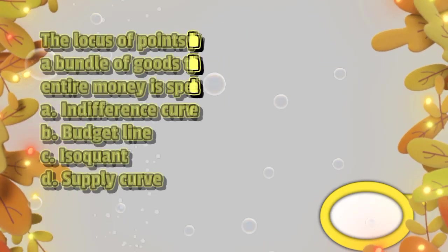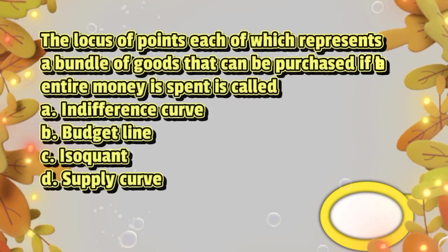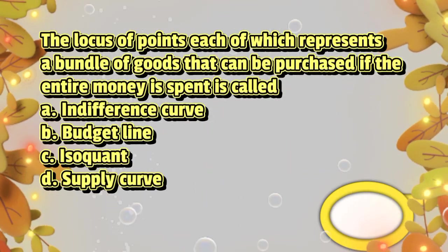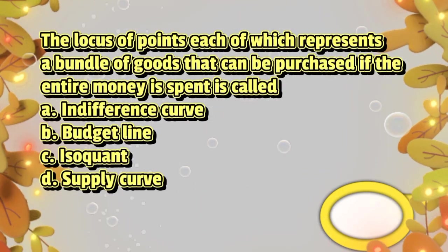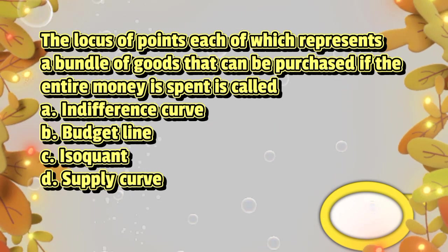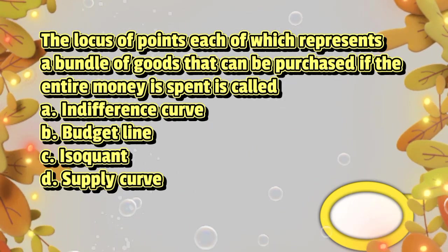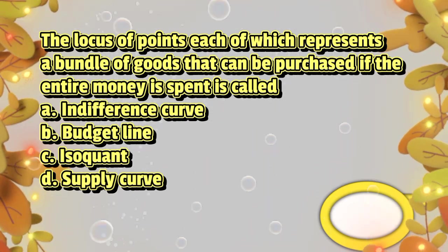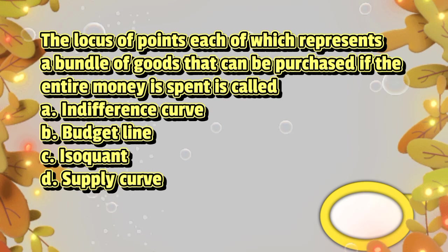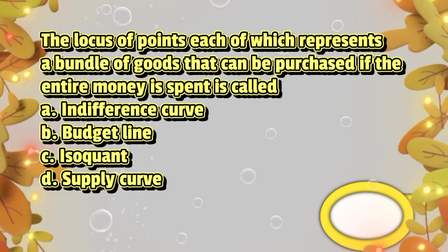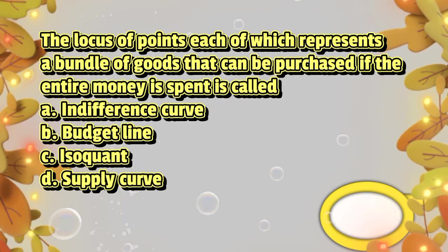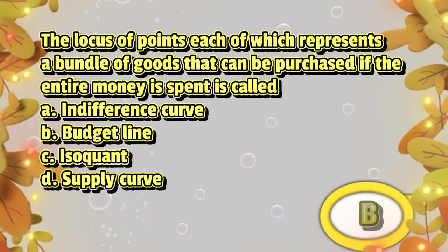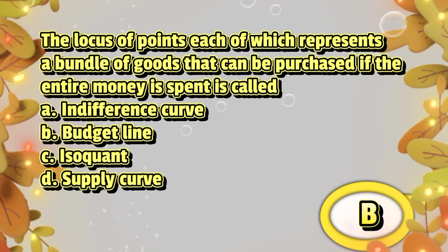The locus of points, each of which represents a bundle of goods that can be purchased if the entire money is spent, is called. A. Indifference curve. B. Budget line. C. Isoquant. D. Supply curve. The answer is letter B.